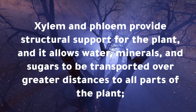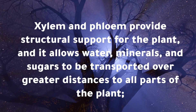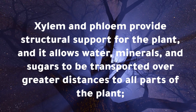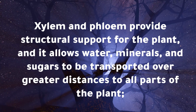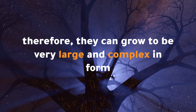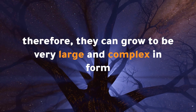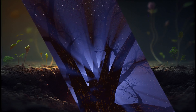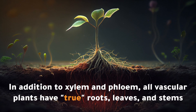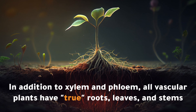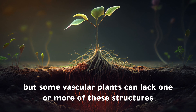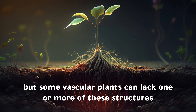Xylem and phloem provide structural support for the plant, and they allow water, minerals, and sugars to be transported over greater distances to all parts of the plant. Therefore, vascular plants can grow to be very large and complex in form. In addition to xylem and phloem, all vascular plants have true roots, leaves, and stems, but some vascular plants can lack one or more of these structures.